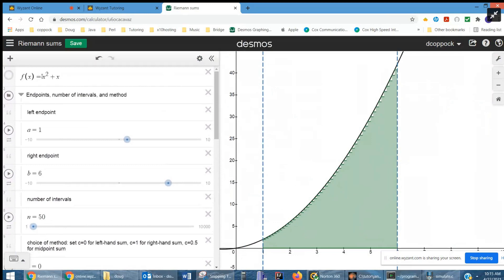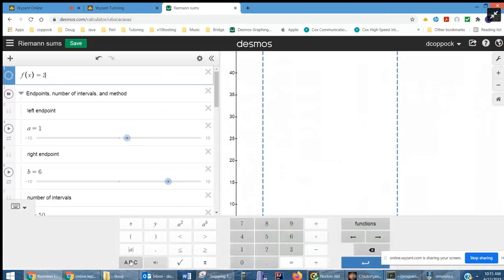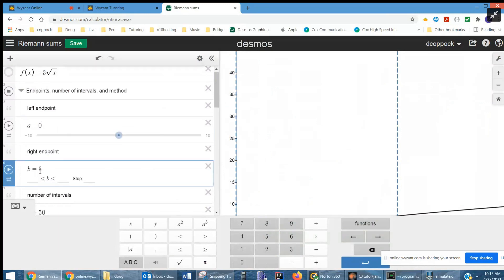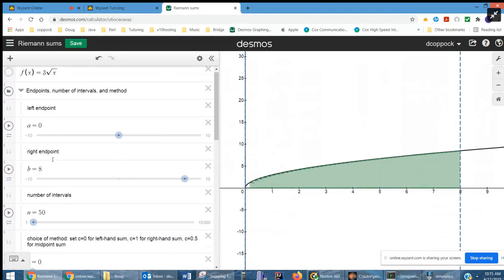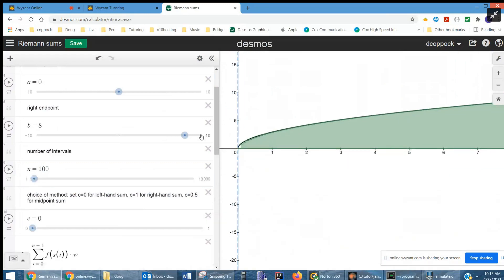Now, I'll show you how I change this to do g of x. I'm going to change this function to 3 square root of x. And I'm going to have a left endpoint of 0, a right-hand endpoint of 8. There we go. And we're going to take this to 100 rectangles for 100 intervals.